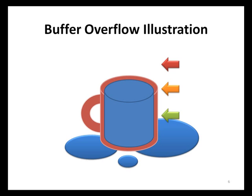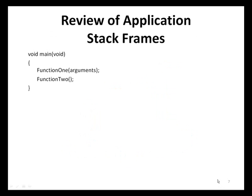Let's now review the internals of how stacks and heaps operate and then see how a malicious user may exploit a buffer overflow vulnerability. The first type of buffer overflow that will be discussed is a stack-based buffer overflow. In order to understand the internals of stack-based buffer overflows, it is important to first understand how an application stack frame functions. Here is a sample C program that calls a function called Function1 and then calls a second function called Function2. Let's see what occurs on the application stack when this program executes.